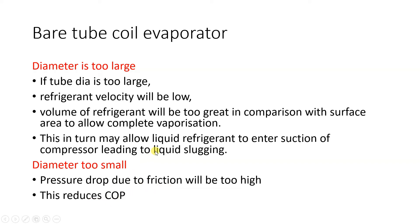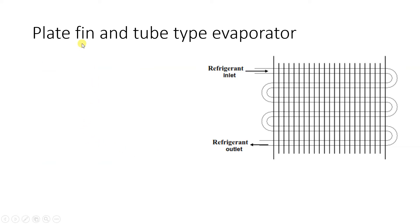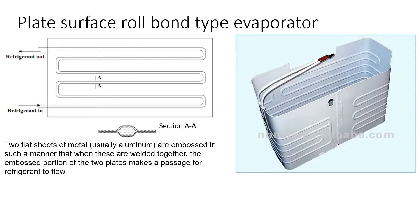Next is the plate fin and tube type of evaporator — the same configuration we covered for condensers. Refrigerant enters from the top of the evaporator tube and exits from the bottom. The tubes are made of copper and the fins are made of aluminium. The next type is the plate surface roll bond evaporator.